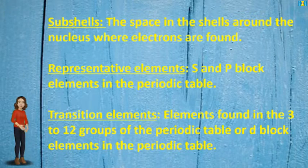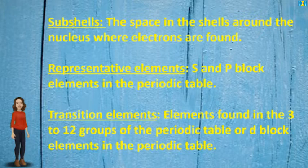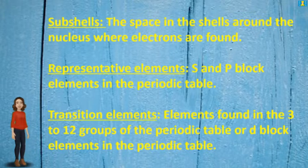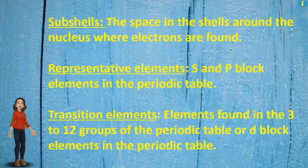Representative elements — S and P block elements in the periodic table. Transition elements — elements found in the 3rd to 12th groups of the periodic table, also called D block elements in the periodic table.